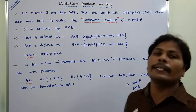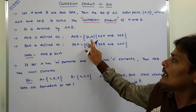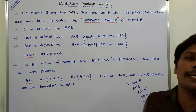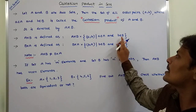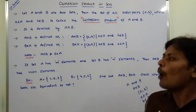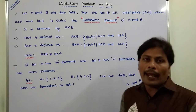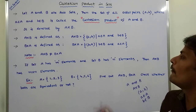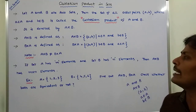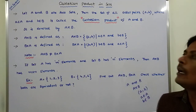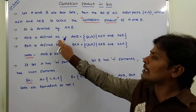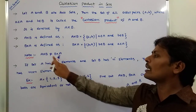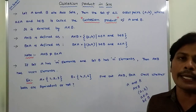A cross B is defined as the ordered pair (a, b), where 'a' belongs to the first set A and 'b' belongs to the second set B. Now, B cross A is defined as the ordered pair (b, a), where 'b' belongs to the second set and 'a' belongs to the first set. By observing A cross B and B cross A, we conclude that A cross B is not equal to B cross A.